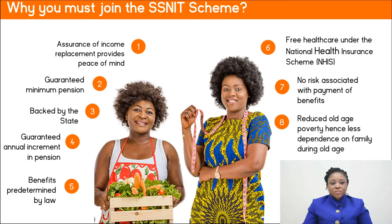The SNIT scheme is also backed by the state. Under the SNIT scheme, there is a guaranteed annual increment in pension, also known as indexation. The benefits under the SNIT scheme are predetermined by law. In calculating your pension, three factors are considered: your contributions based on the income declared to SNIT, your age at the point of retirement, and the number of months of contribution. Free health care under the National Health Insurance is also a benefit that all contributors and pensioners enjoy.